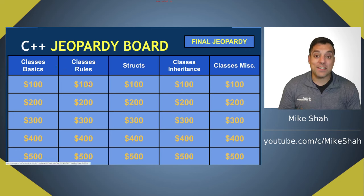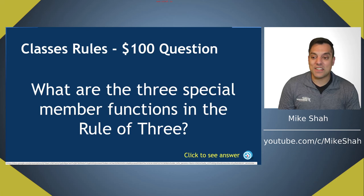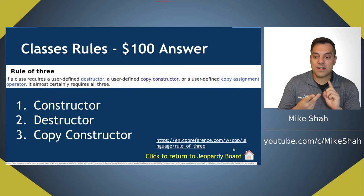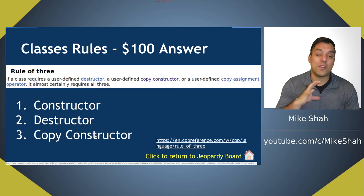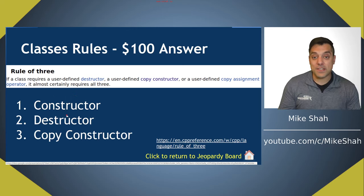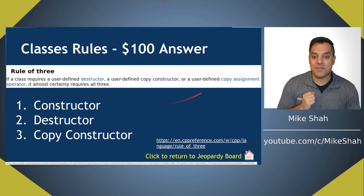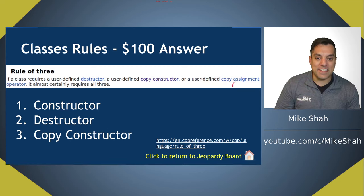That's the basics of classes — hopefully a good warm up. Now let's think about class rules. What are the three special member functions in the rule of three? We have the constructor, destructor, and copy constructor — bonus points if you also mentioned the copy assignment operator. If you define any one of these, you want to define all of them, usually including the copy assignment operator.